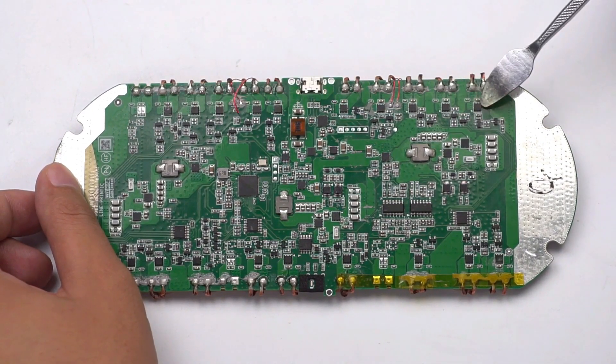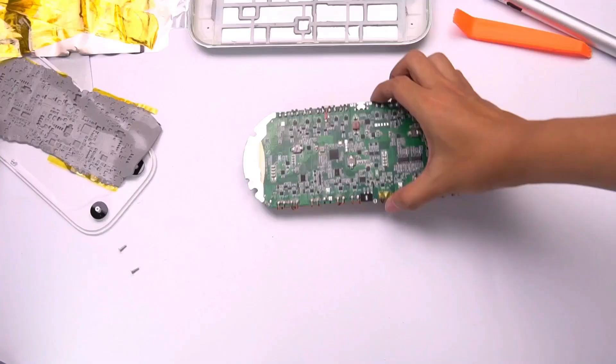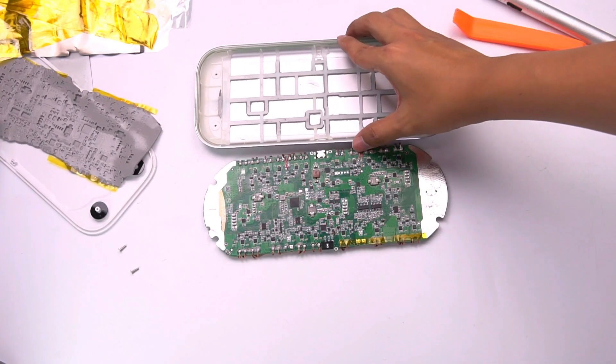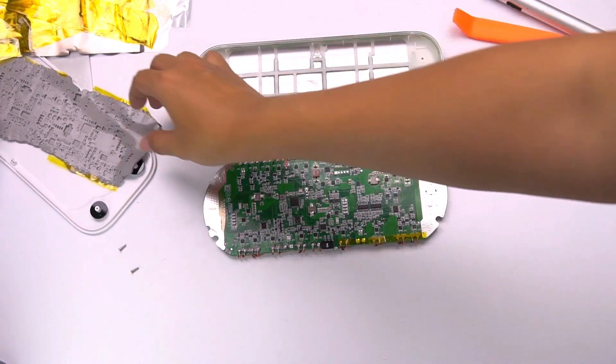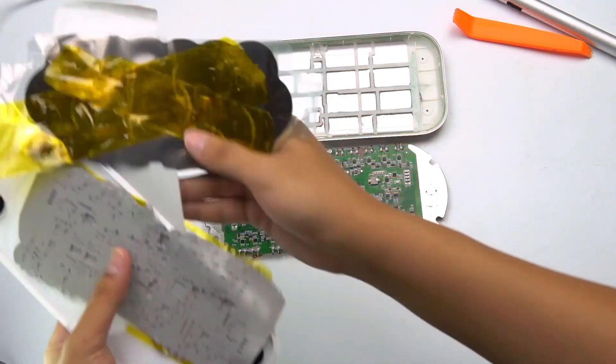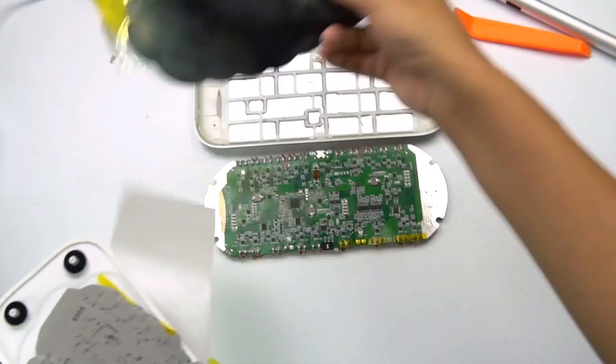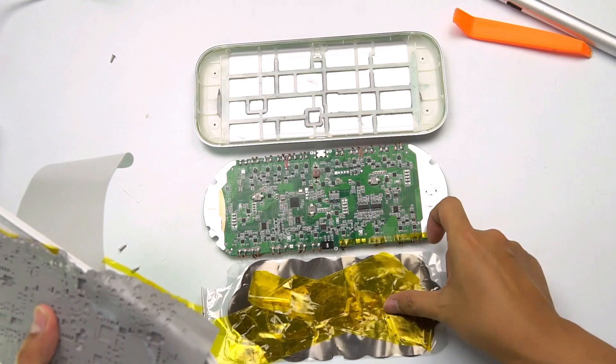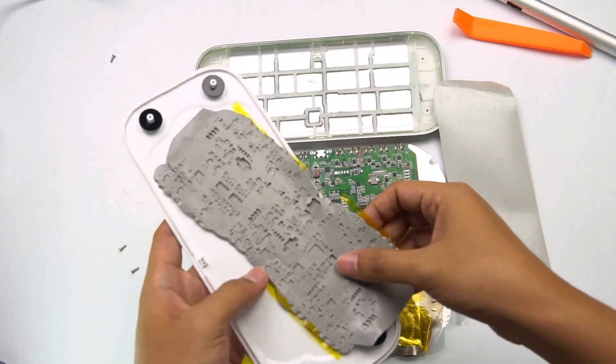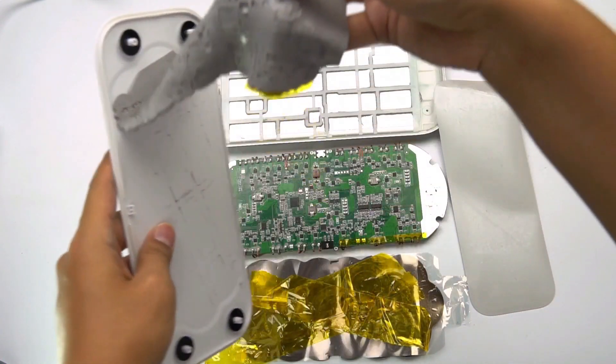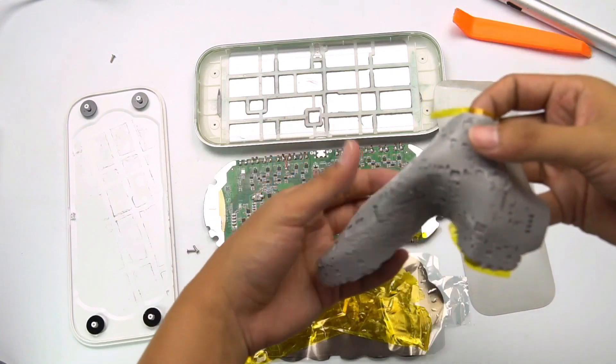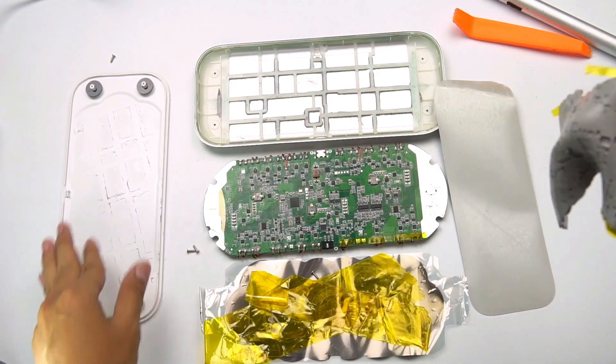For this multi-coil wireless charger, the charging experience is pretty good, cause you do not need to align. But the heat problem can't be ignored. We can find by our teardown that this wireless charger adapts graphite heat dissipation layer and thick thermal conductive pad, which can effectively dissipate heat. So for the AirPower Xiaomi version, will you be interested in it?